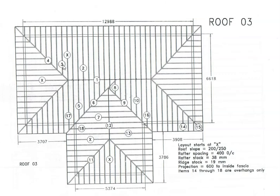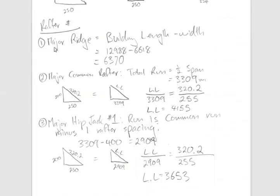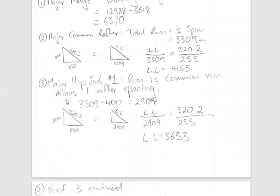Now we calculate hip jack one. When dealing with the run, we start with the run. Recognize that the run of this rafter is the same as the run of the common rafter, but we subtract one full spacing. That's what's done in the math here — major hip jack one. Once we get that run of 2909, we do the same procedure as the common and get a line length of 3653.